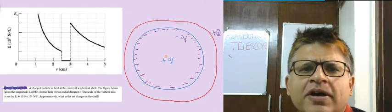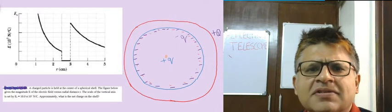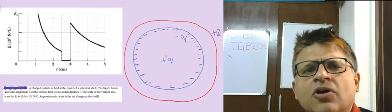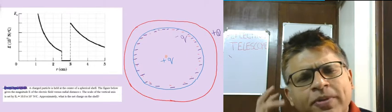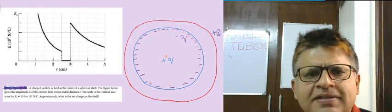The problem says you have a graph given which is electric field versus distance, and there is a small charge which has been kept at the center of a spherical shell. So the moment you heard the word spherical shell, you know you have a thickness, the inner radius and outer radius.